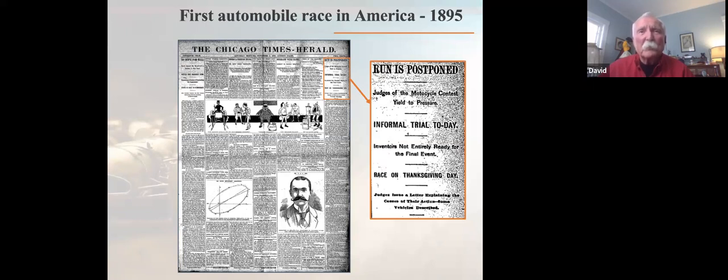But an exhibition run or consolation race or the informal trial with a $500 purse to the winner took place on that Saturday for those vehicles that were ready. Two entries, H. Mueller Manufacturing Company of Decatur, Illinois, and Duryea Motor Wagon of Springfield, Massachusetts, made the run while remaining entries demonstrated their vehicles but did not run the entire course. Mueller won the contest. Duryea was sidelined when running into a ditch trying to avoid a collision with a horse-drawn wagon.